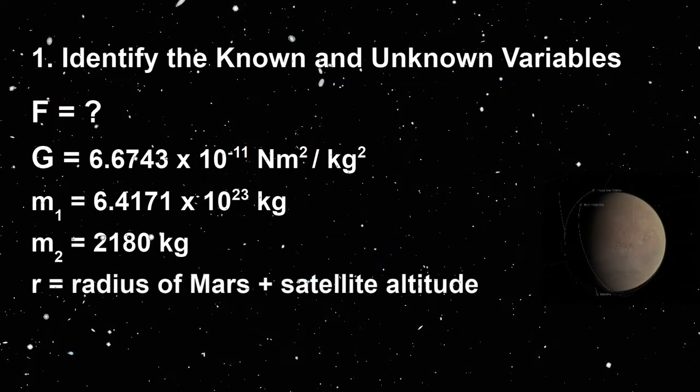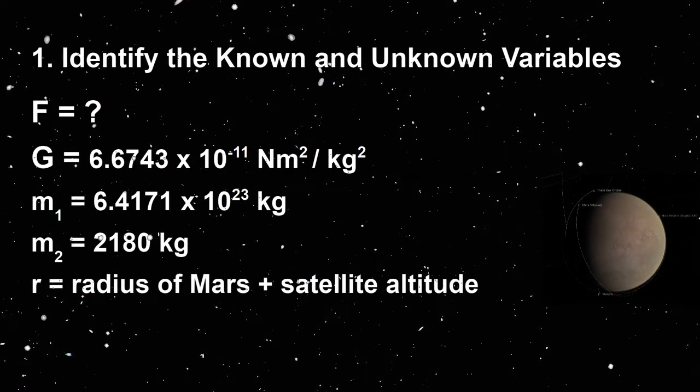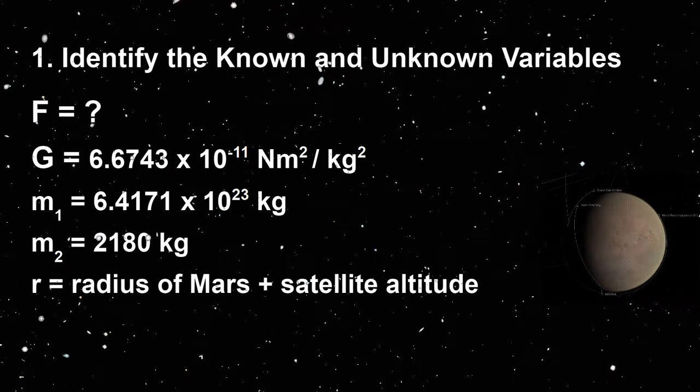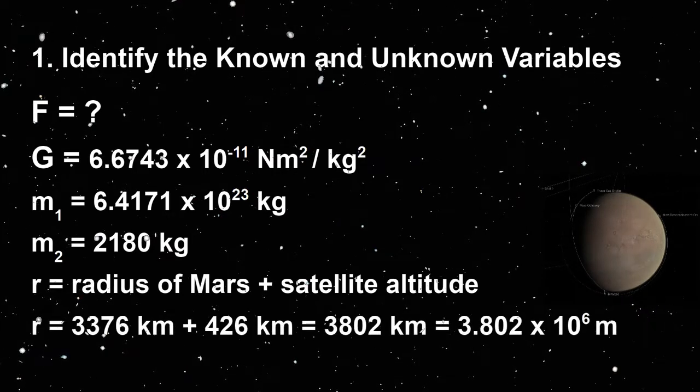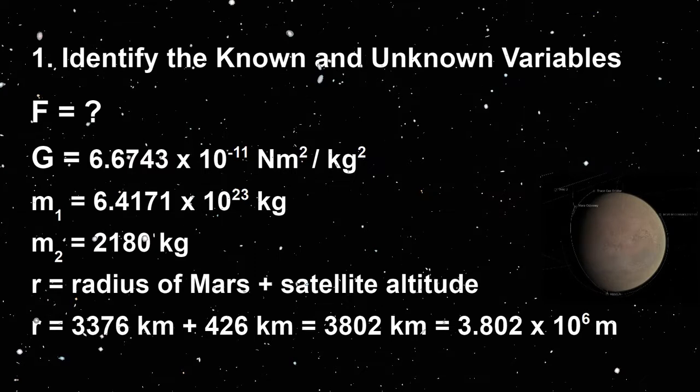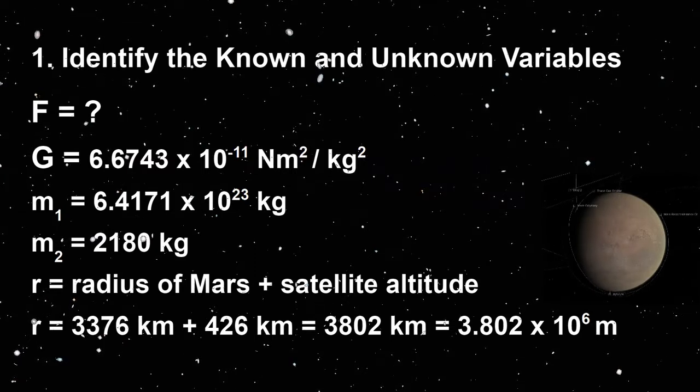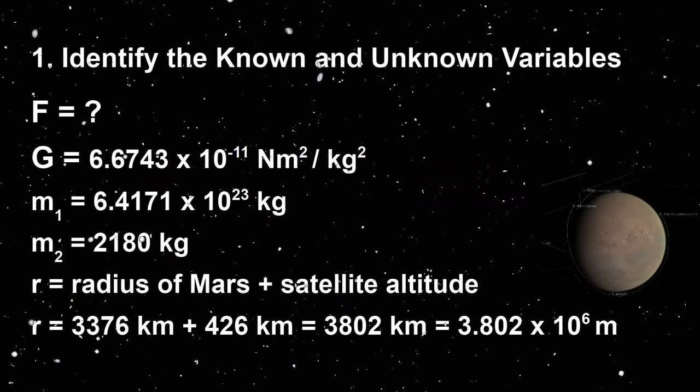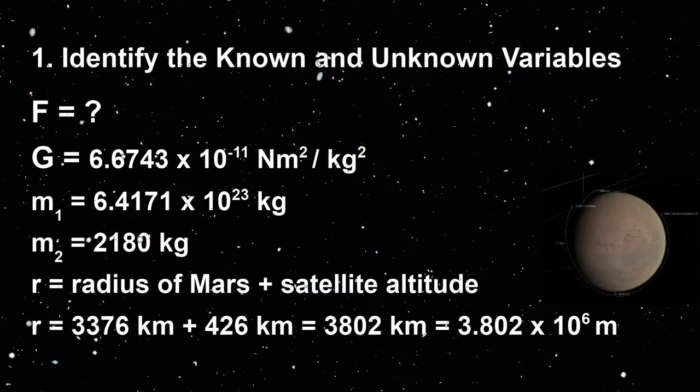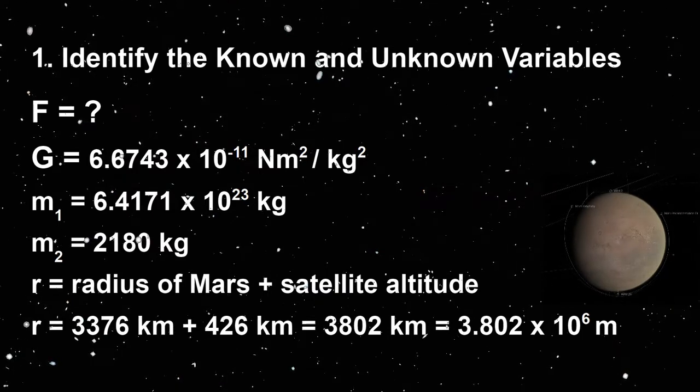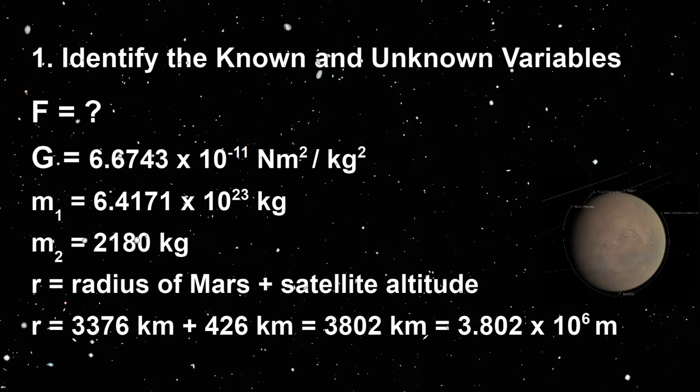R is the radius of Mars plus the altitude of the orbiter. The radius of Mars is 3,376 kilometers plus the altitude of 426 kilometers, for a total of 3,802 kilometers, which we need to convert to meters, so we will use 3.802 times 10 to the 6 meters.